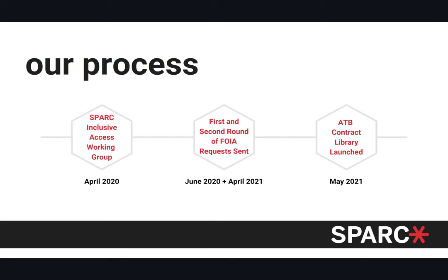In our process so far, we assembled an Inclusive Access Working Group in April of 2020. That group recommended we send out our first round of FOIA — Freedom of Information Act — requests in June of 2020, and then again in April 2021. We launched in May 2021 the Automatic Textbook Billing Contract Library that you will see later today.